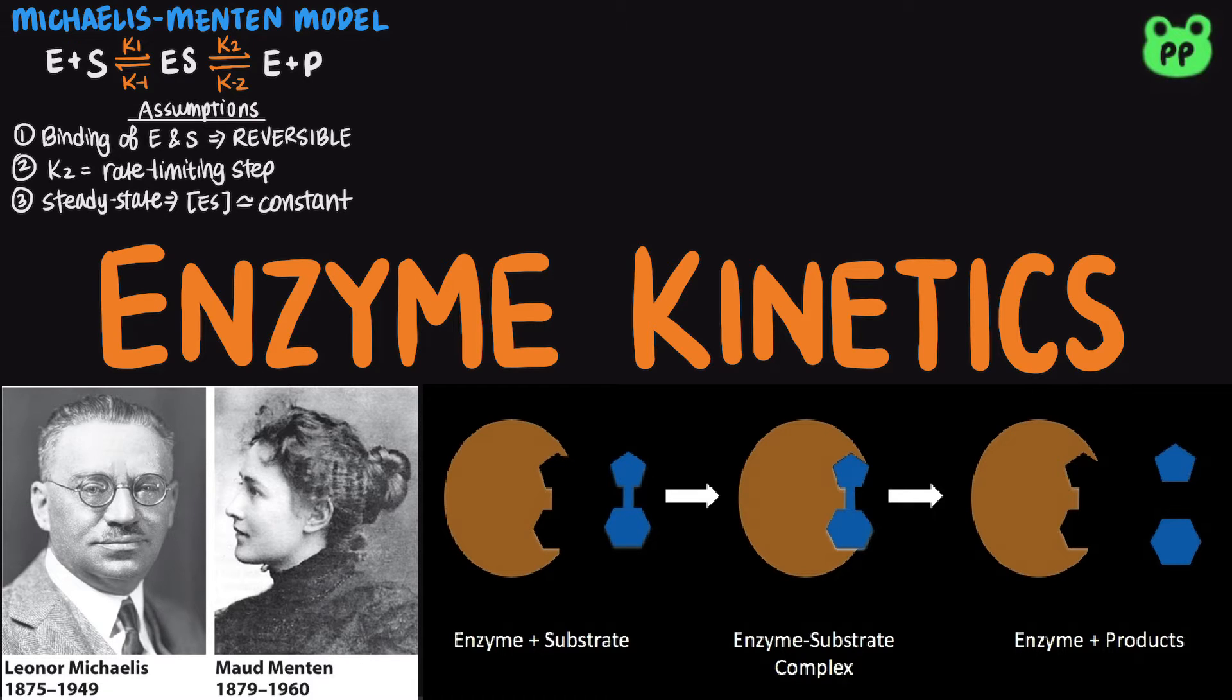The Michaelis-Menten model deals with the initial reaction velocity V0. The product concentration is assumed to be 0. Therefore, the rate of the second reaction in reverse is not taken into account.